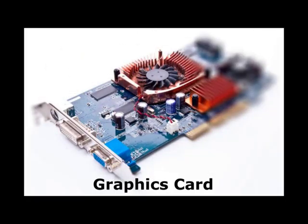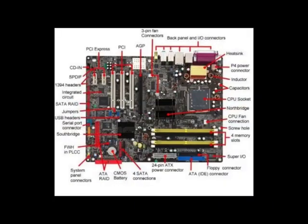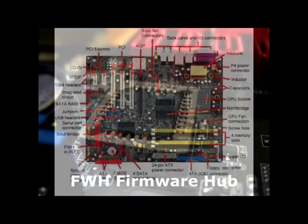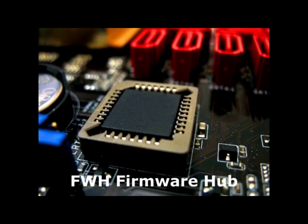A graphics card improves picture quality and supports high resolution and 3D effects. A video card controls the display settings of the PC system. Graphics cards are used primarily for gaming consoles, while video cards are used for video editing and multimedia projects.